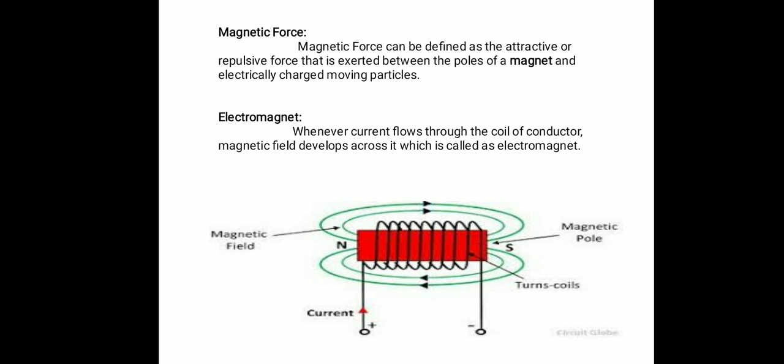Magnetic force can be defined as the attractive or repulsive force that is exerted between the poles of a magnet and electrically charged moving particles. A permanent magnet has two poles — north pole and south pole. There is always attraction between north pole and south pole, and a repulsion force between north-north or south-south poles. That force of attraction and repulsion between the two poles of the magnet or between electrically charged moving particles is called the magnetic force.